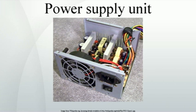The first IBM PC power supply unit supplied two main voltages, plus 5V and plus 12V. It supplied two other voltages, minus 5V and minus 12V, but with limited amounts of power. Most microchips of the time operated on 5V power. Of the 63.5W these PSUs could deliver, most of it was on the plus-5V rail.